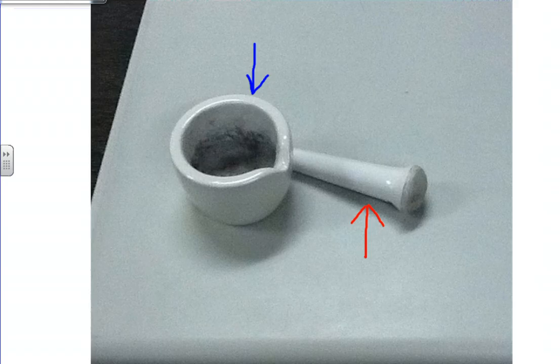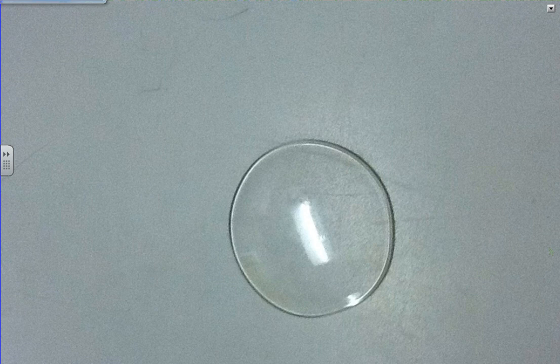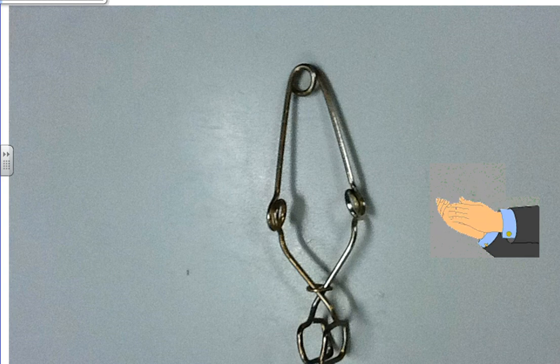Opening up the next door, behind door number three we have in the blue arrow the mortar and the red arrow the pestle. Mortar and pestle. Open up the next window, what could this item be? If you guessed watch glass, you are correct. That is the watch glass. Excellent work.